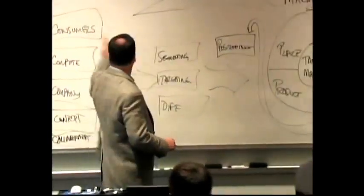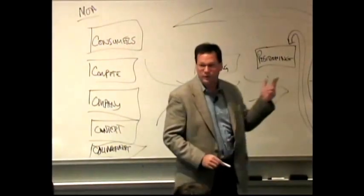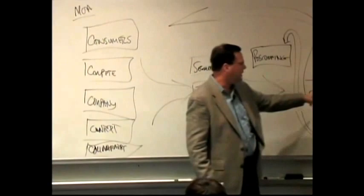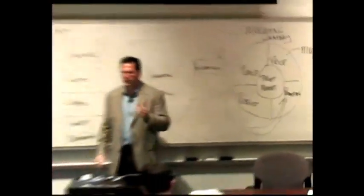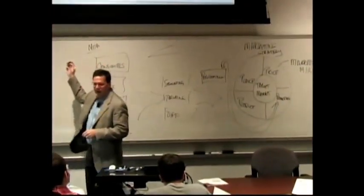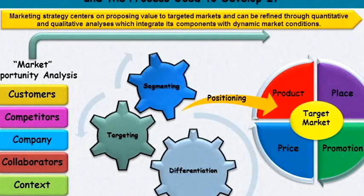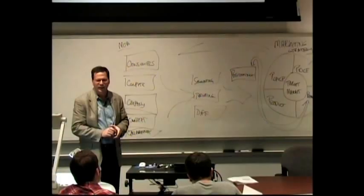It's really getting at the value equation, so you can think about consumers and value because that's one of the first things we talk about in the class. So how does it tie this value equation on this side, the consumer side, to what we're trying to do in terms of the stimuli, the marketing mix on the right side and the target markets? Do you see how conjoint helps with that?